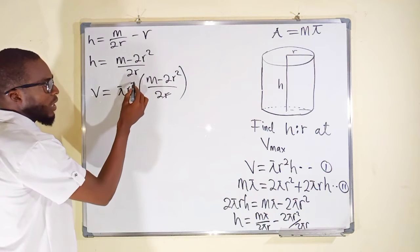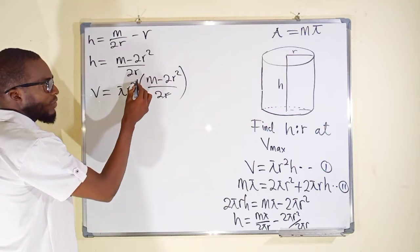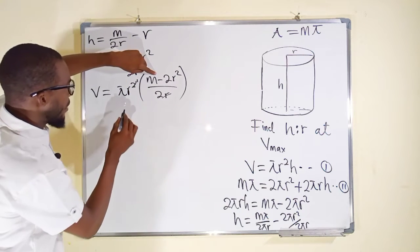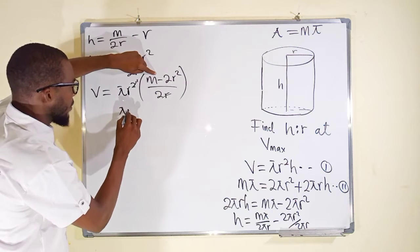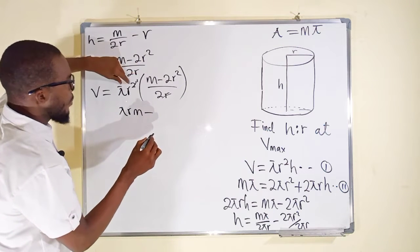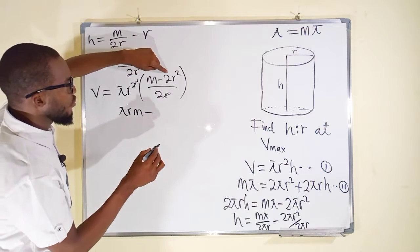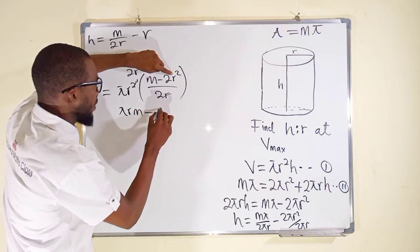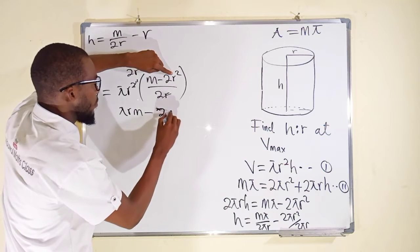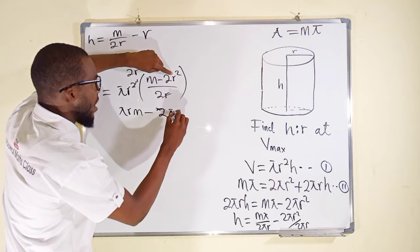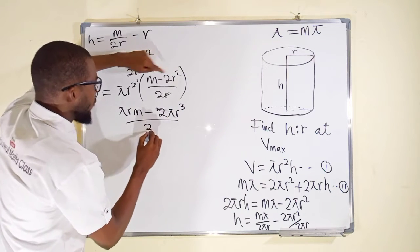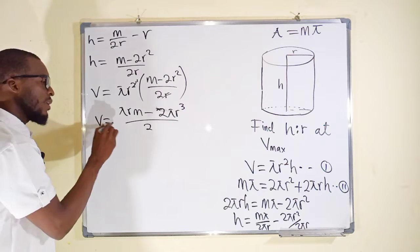One of the r's in r squared cancels with the 2r in the denominator. So pi r multiplied by M gives pi r M, and minus pi r times 2r squared gives 2 pi r cubed. Dividing by 2, we have V equals (pi r M minus 2 pi r cubed) over 2.